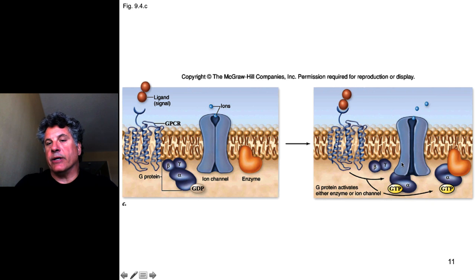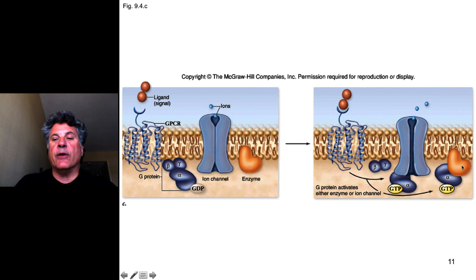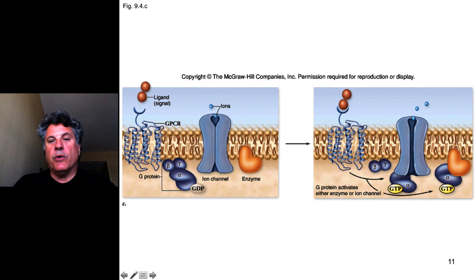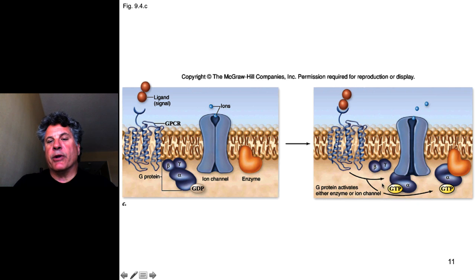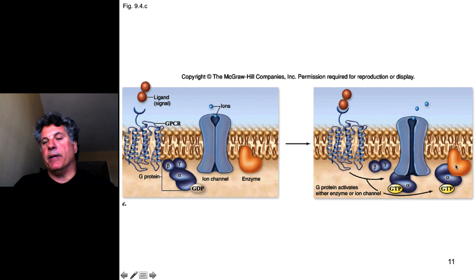For example, the activated alpha subunit can bind to ion channels that cause those ion channels to open and ions to flow down their concentration gradient. Or, an activated alpha subunit bound to GTP can interact with enzymes that become activated and then elicit a cellular response. So in the case of G-protein coupled receptors, the receptors act indirectly to relay information — they bind the signal, but pass the job of transducing it through a heterotrimeric G-protein, which then activates downstream proteins.